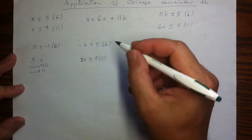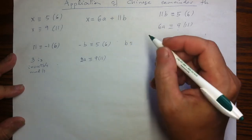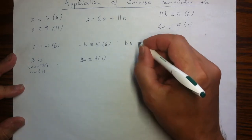Well, going back to the first congruence, I know that b is negative 5, which is the same as 1 mod 6.